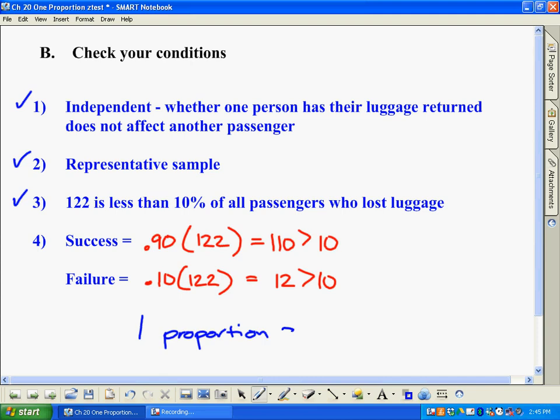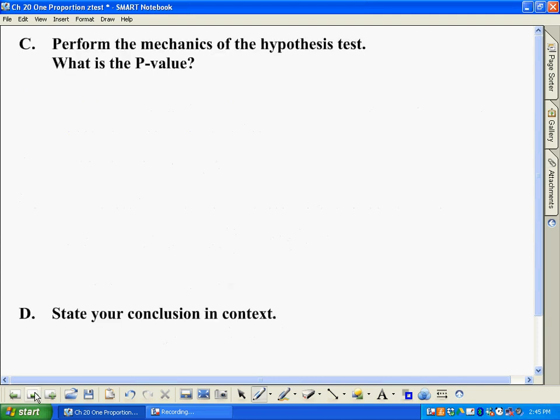Now comes the meat of actually proving this. Once we've met conditions and written our hypotheses, we're going to go ahead and actually run the test right now. So once again, we do know p-hat was 103 out of 122, or 0.844. We also know that p equals 0.90.